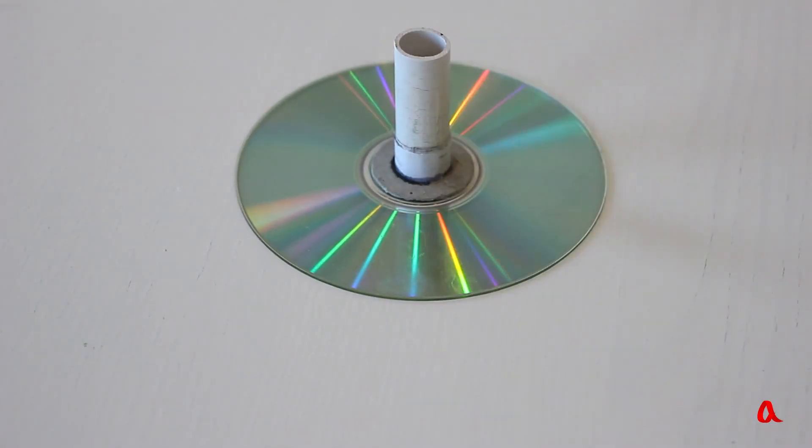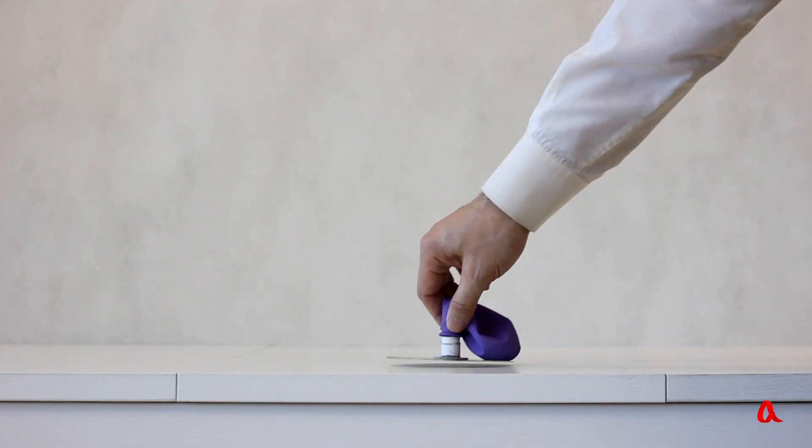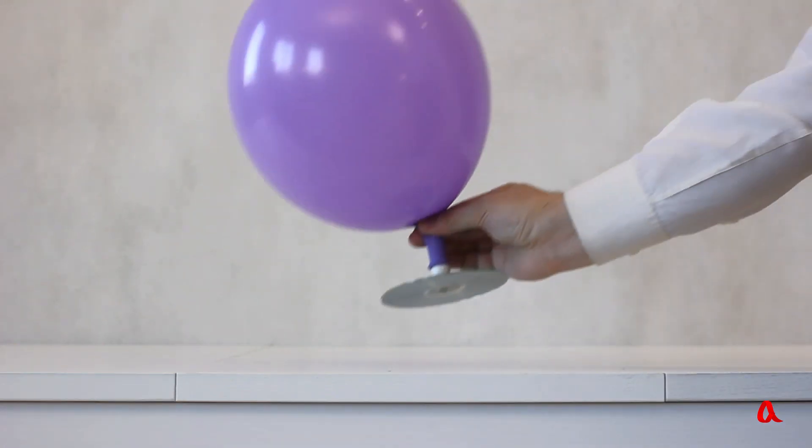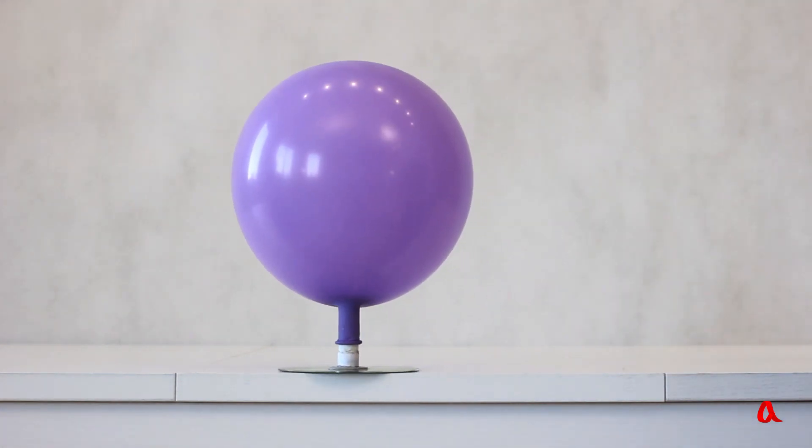To make a toy air-cushioned craft we attach a piece of plastic tube to the central hole in a compact disc and pull a rubber balloon over the tube. We inflate it and put the disc on the table. The disc and the balloon glide over the table with hardly any friction.